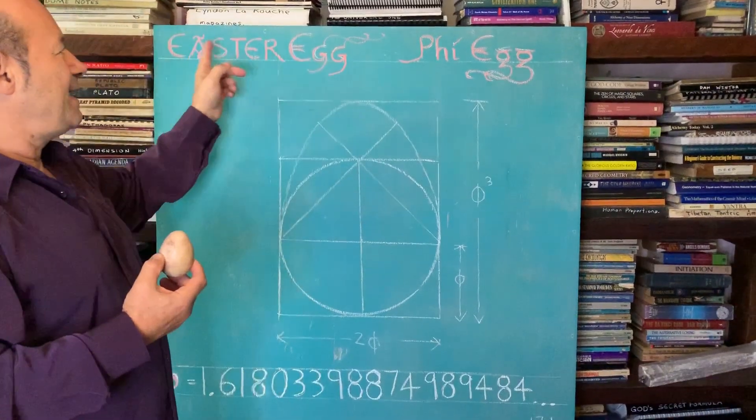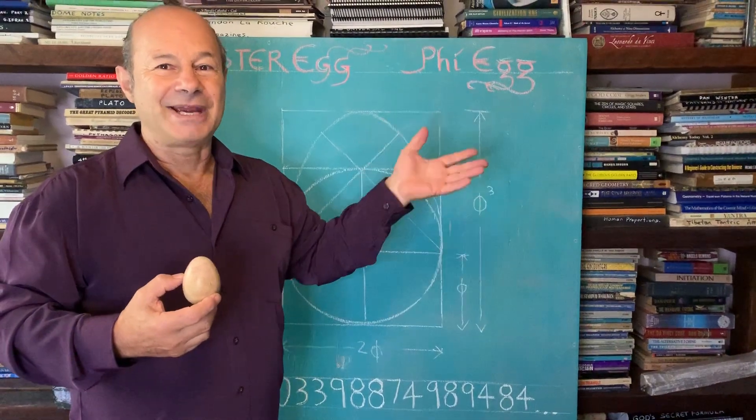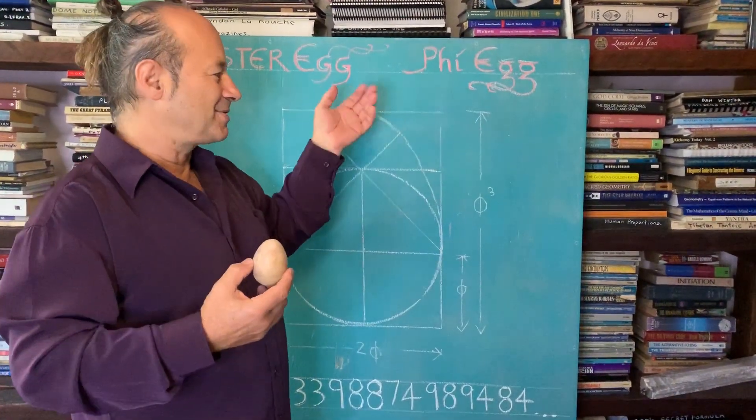So it is the Easter egg, but I'm going to call this the Phi egg, an egg symbolic of creation as we know, birth and creation.